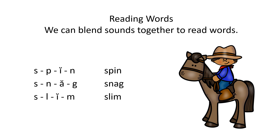Reading words. We can blend sounds together to read words. S-P-I-N — spin. Do it with me: S-P-I-N — spin. Do it on your own. Very good. S-N-A-G — snag. Do it with me: S-N-A-G — snag. Do it on your own. Very nice. S-L-I-N — slim. Do it with me: S-L-I-N — slim. Do it on your own. Good job.